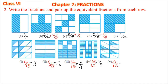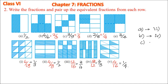Option (v) is 4 by 16; dividing by 4 gives 1 by 4. Now we can match: A (1 by 2) matches with (ii); B (2 by 3) matches with (iv); C (1 by 3) matches with (i); D (1 by 4) matches with (v); and E (3 by 4) matches with (iii).